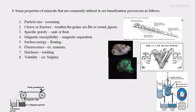The next property is volatility — that is, the conversion of solid to gas without passing through a liquid phase. An example of a mineral separated using this property is sulfur.